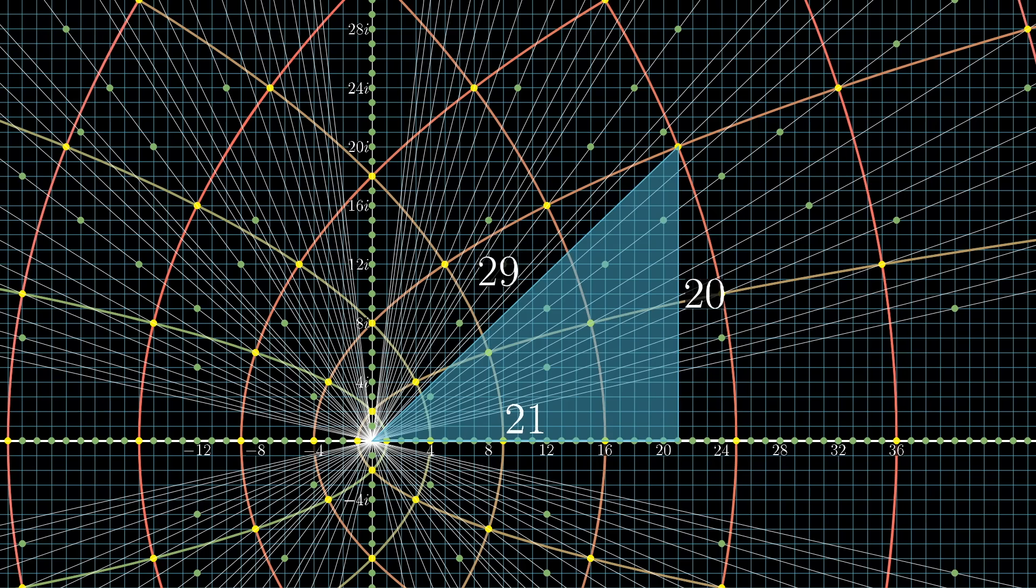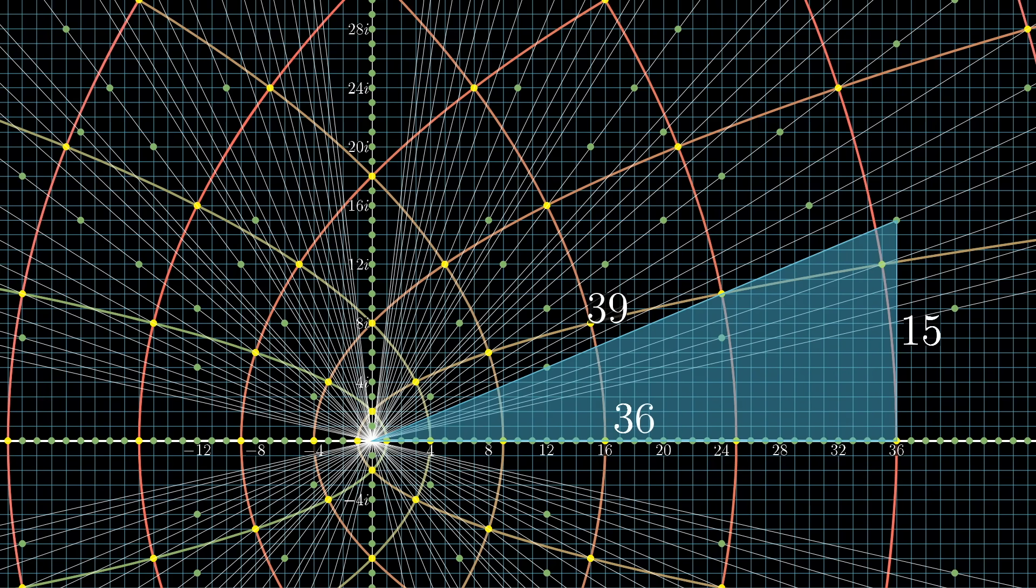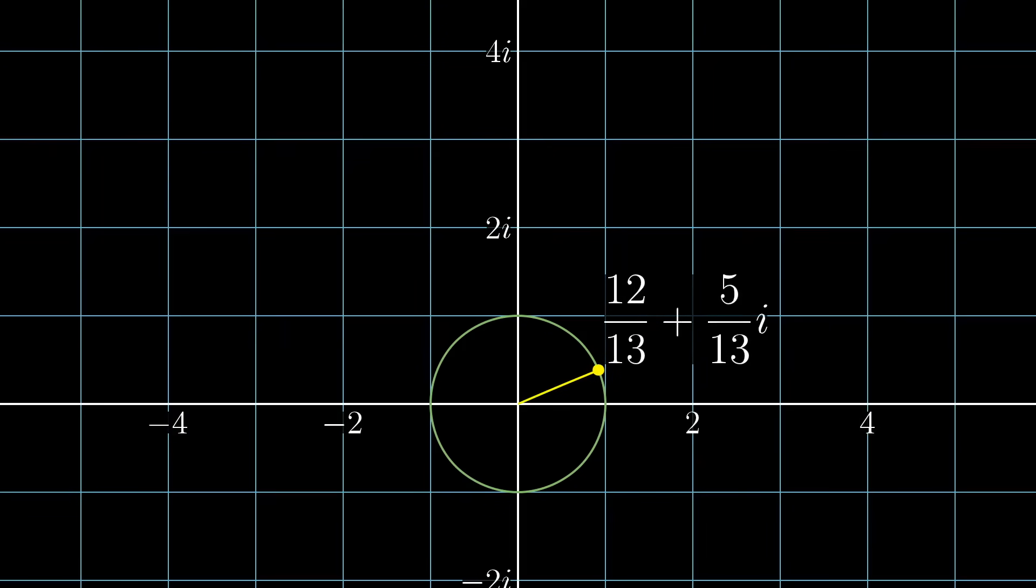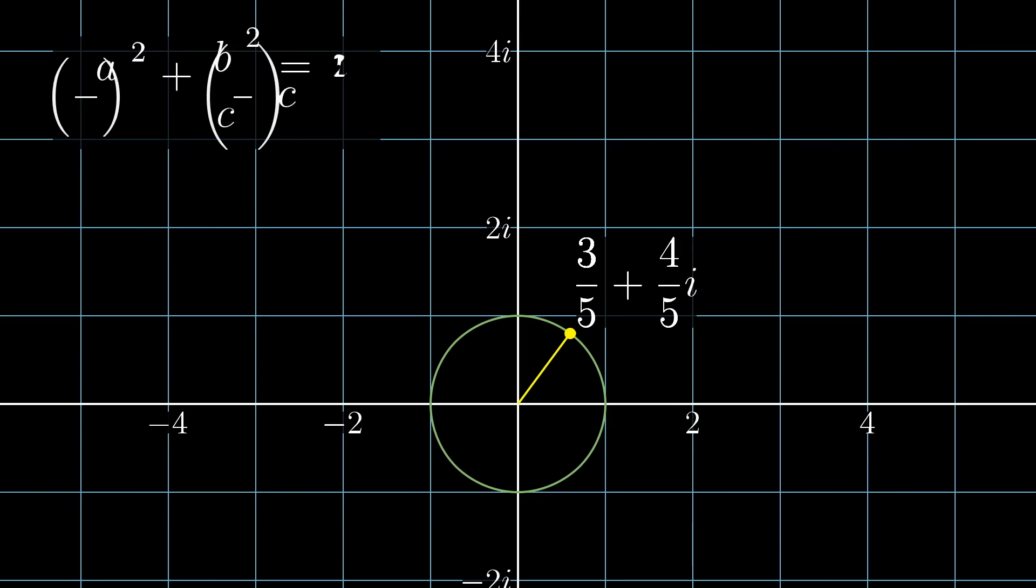To see why, we'll now shift to a different view of the Pythagorean triple problem, one that involves finding points on a unit circle that have rational coordinates. If you take the expression a squared plus b squared equals c squared, and divide out by that c squared, what you get is a over c squared plus b over c squared equals 1.